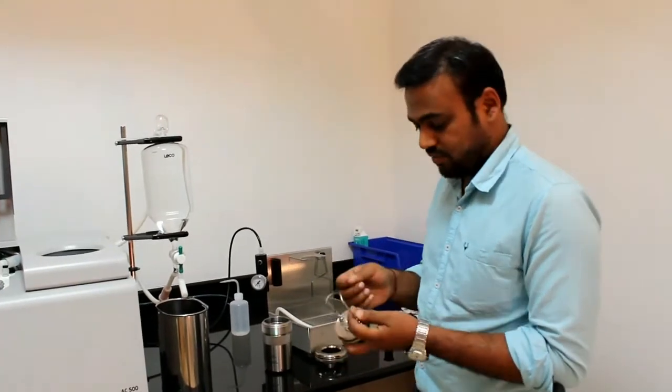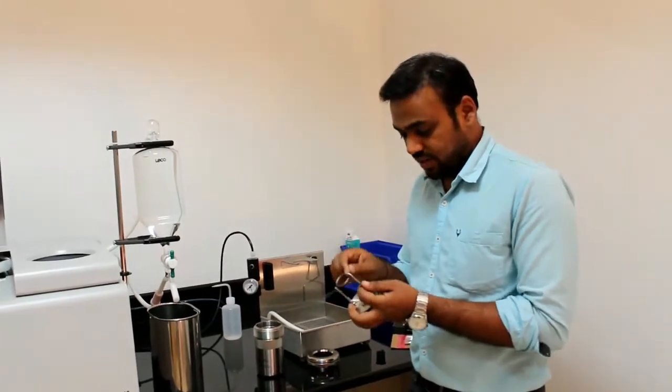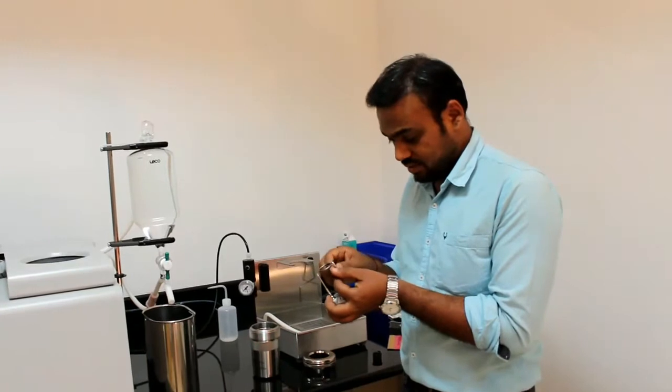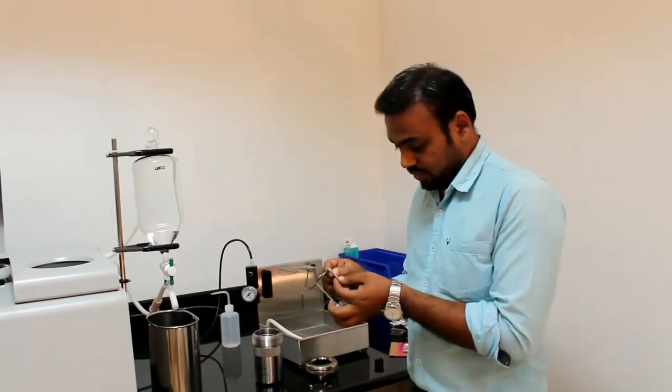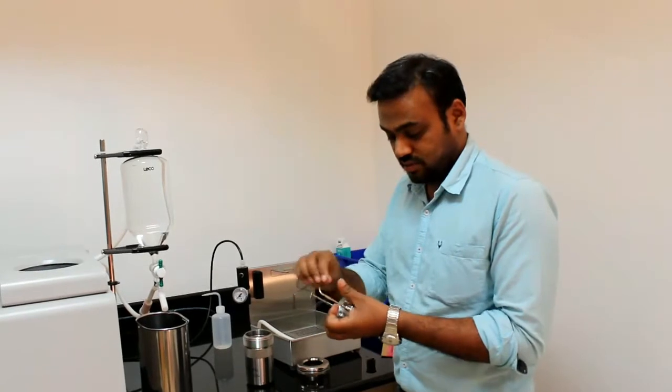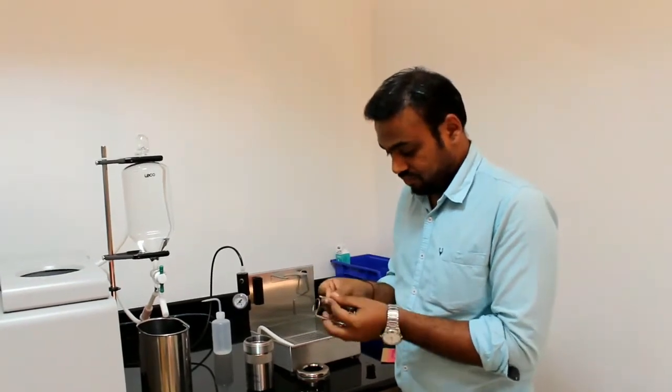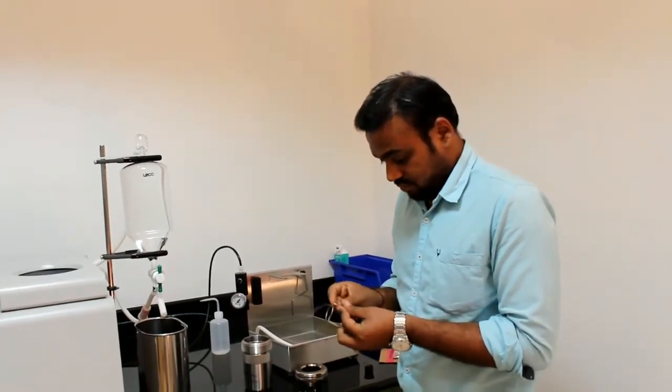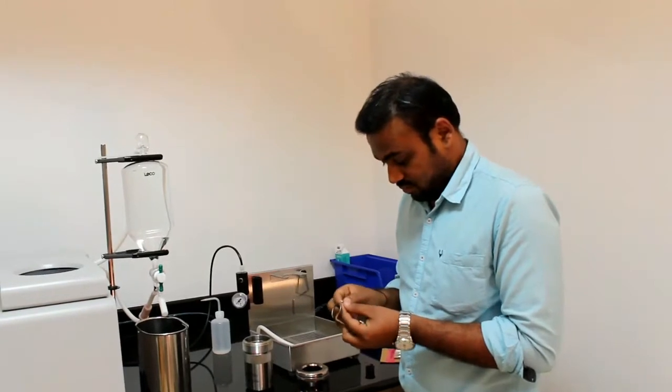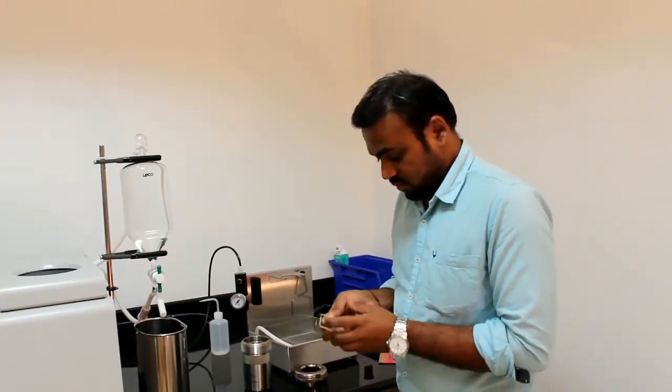We have two types of combustion fuse, one is thread and another is wire. This is a wire-based combustion fuse. Then we have a notch, so that we can easily put this wire. So now it is tight.